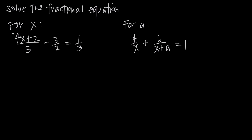Once we've identified that common denominator, we want to multiply every term on both sides of the equation by that number — in this case, 30. We're applying the distributive property, distributing the 30 across each term on the left-hand side and the right-hand side.